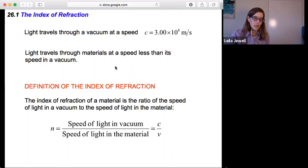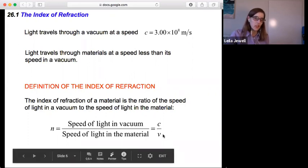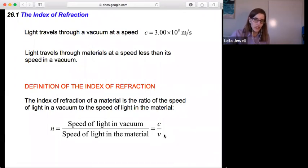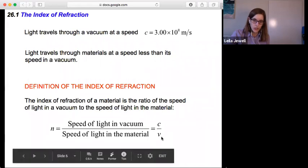And so the way that light travels through different materials defines something known as the index of refraction. The index of refraction of a material is noted with the symbol n. It's the ratio of the speed of light in a vacuum c to the speed of light in that particular material v. So n is equal to c divided by v.